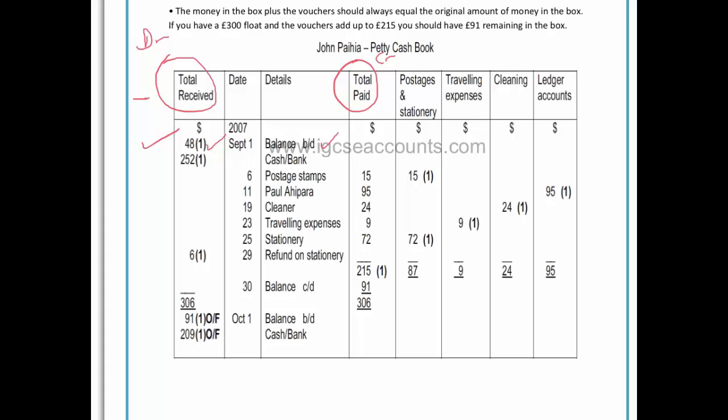When the senior accountant is deciding how much money to give the petty cashier, they will take that $48 away from the $300 they want in the petty cash tin during the month. So $300 minus $48 leaves $252 that needs to be received by the petty cashier, either from the cash or bank accounts. The petty cashier now has $300 in the petty cash tin.